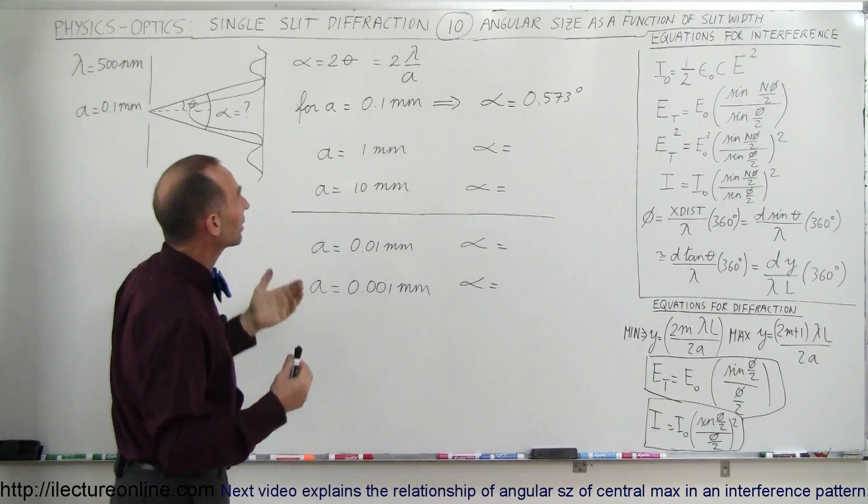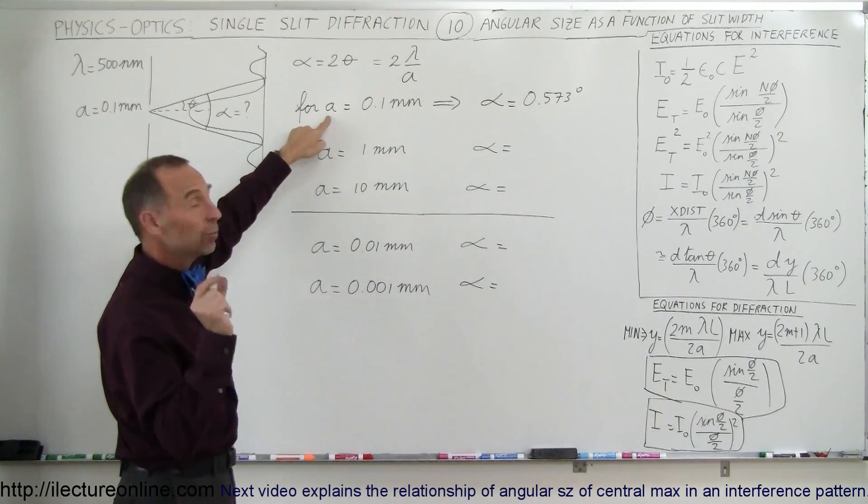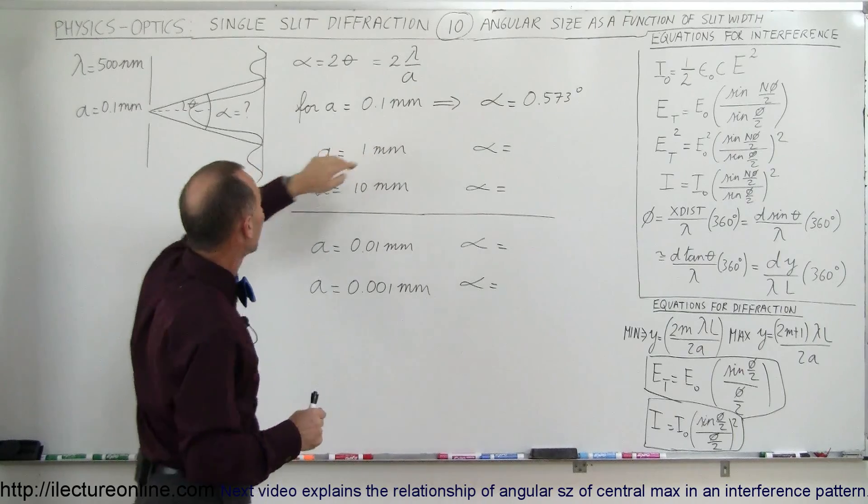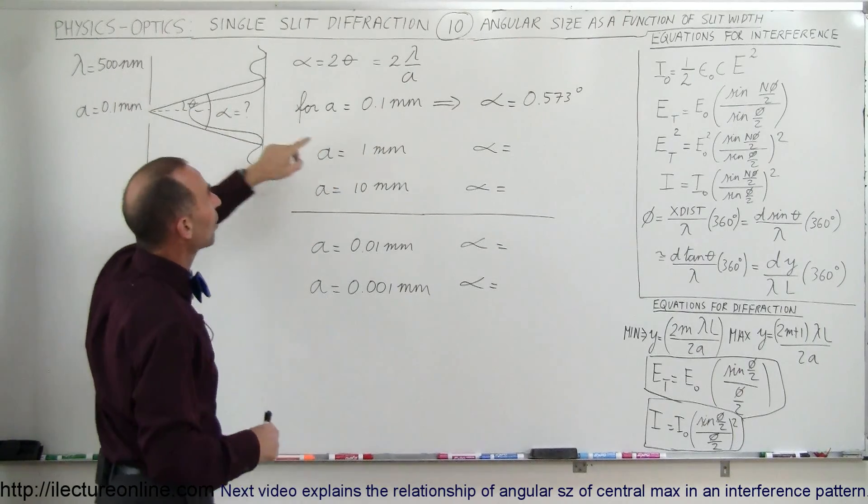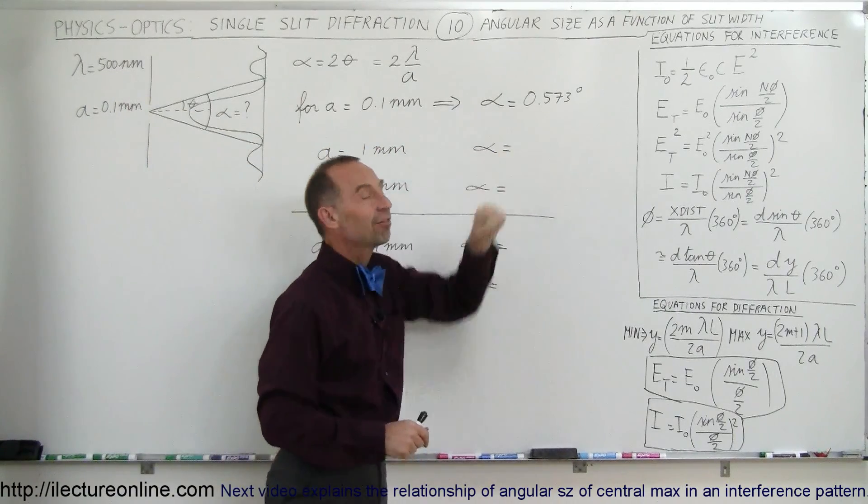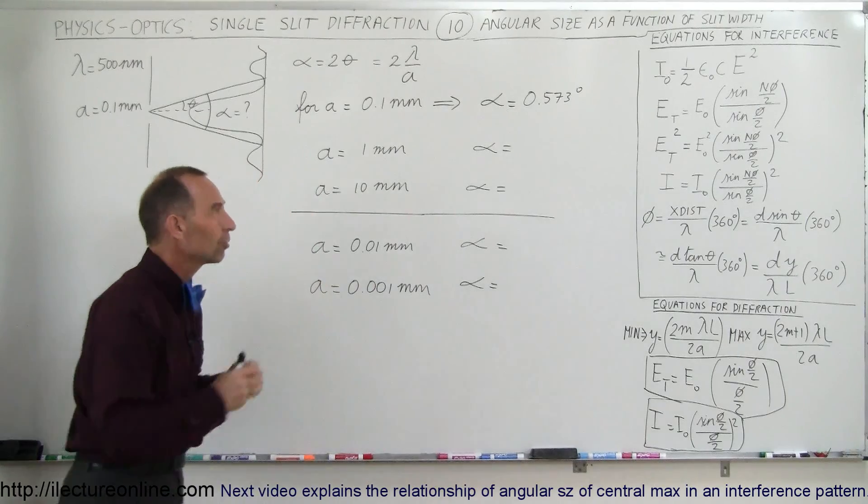Therefore we calculated that when A, the slit width, was 0.1 millimeter for a wavelength of 500 nanometers, the angular size was 0.573 degrees for that central maximum.